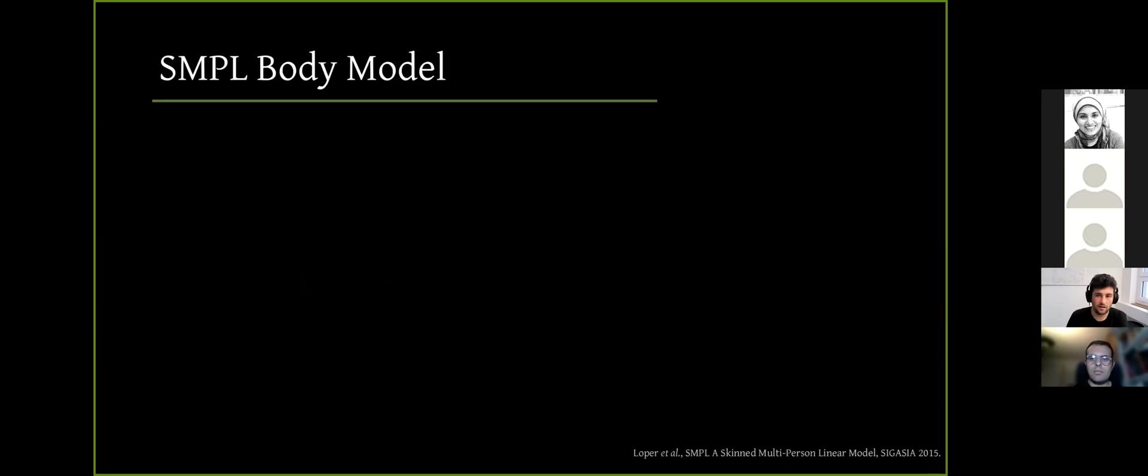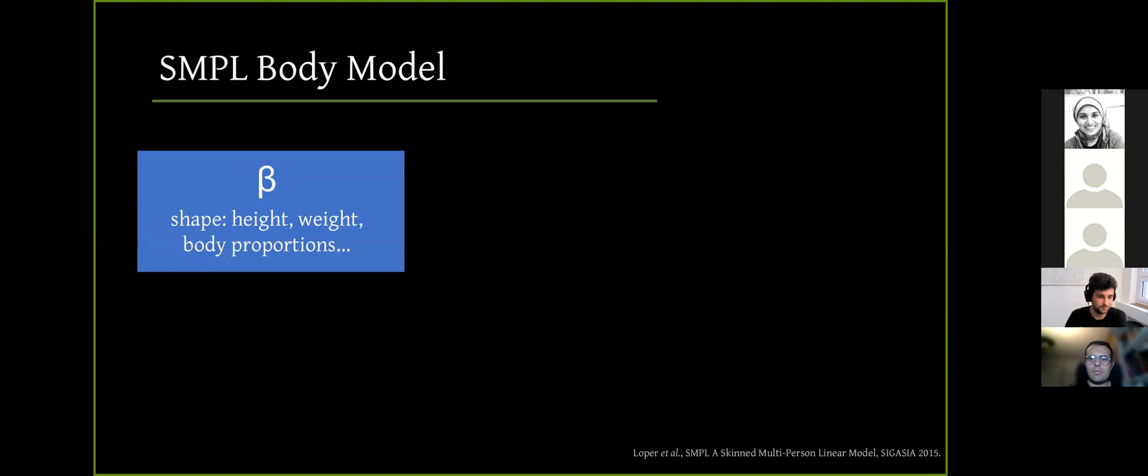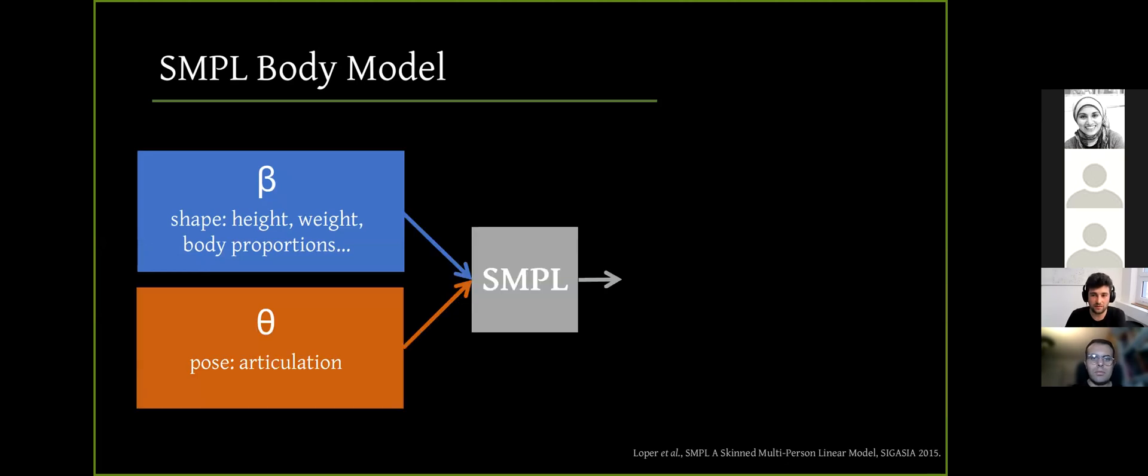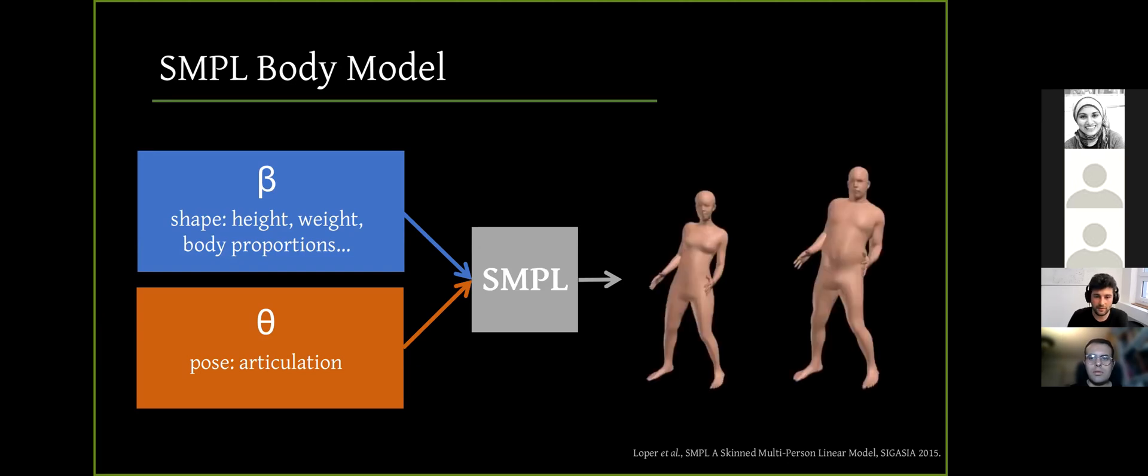Let's look at some preliminaries. So there's not much to introduce here, but SMPL is a generative model that factors human bodies into shape and pose parameters. But the interesting thing here is SMPL is a differentiable function that outputs a triangulated mesh and allows us to backpropagate, which is suitable for neural networks. And also it provides 3D key points which are useful for pose estimation methods.